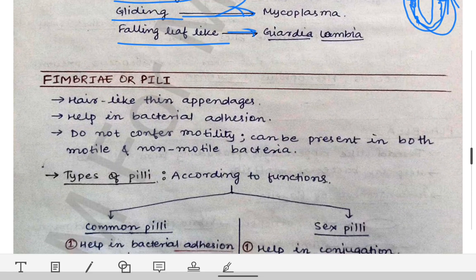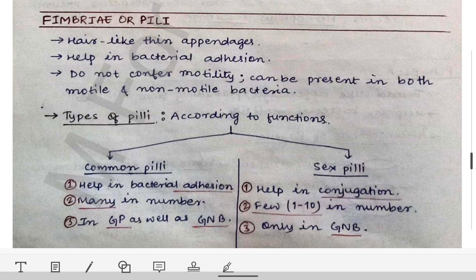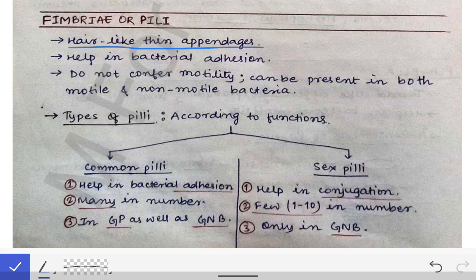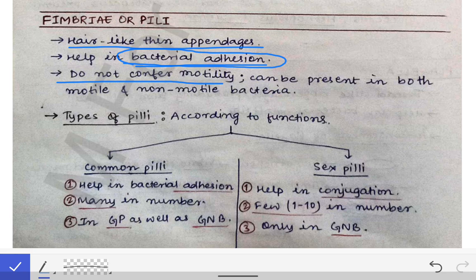Now coming to fimbria or pili. Fimbria are hair-like thin appendages present in bacteria. They do not help in motility — this is a very important point — rather they help in bacterial adhesion. Fimbria can be present in both motile and non-motile bacteria.